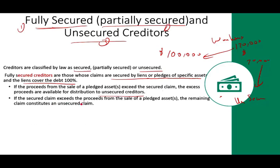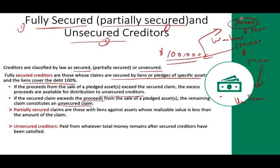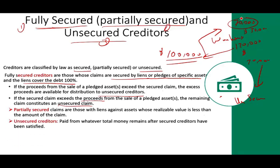If the secured claim exceeds the proceeds from the sale of the pledged asset, the remaining claim constitutes an unsecured claim. For example, if you lend $100,000 and the warehouse is only worth $70,000, you are short $30,000 and become partially secured — $70,000 secured and $30,000 unsecured. Partially secured claims are those with a lien against an asset whose realizable value is less than the amount claimed. Unsecured creditors have no lien and are paid from whatever money remains after secured creditors are satisfied.